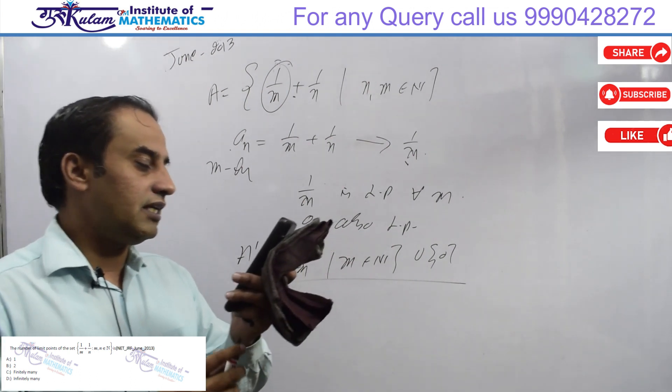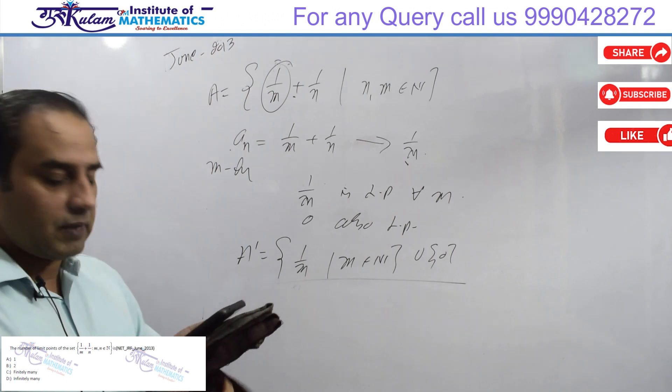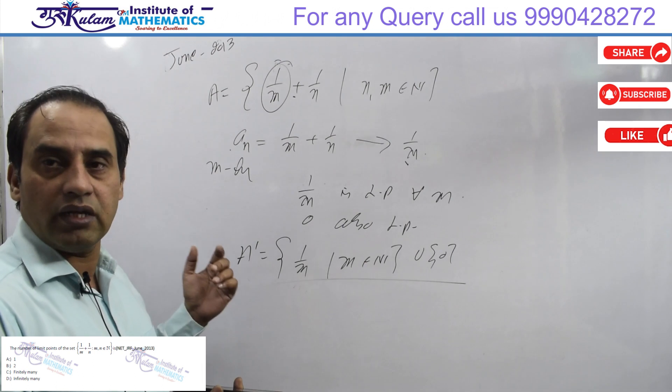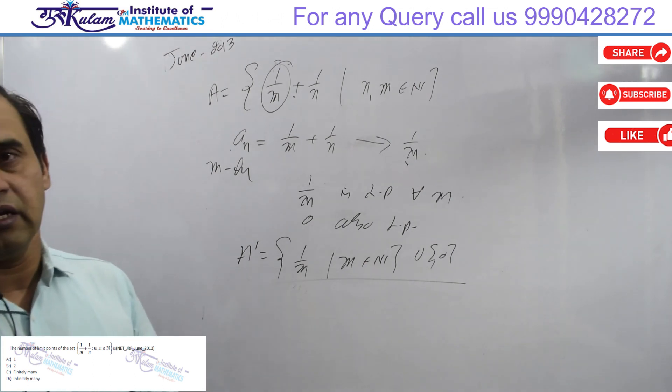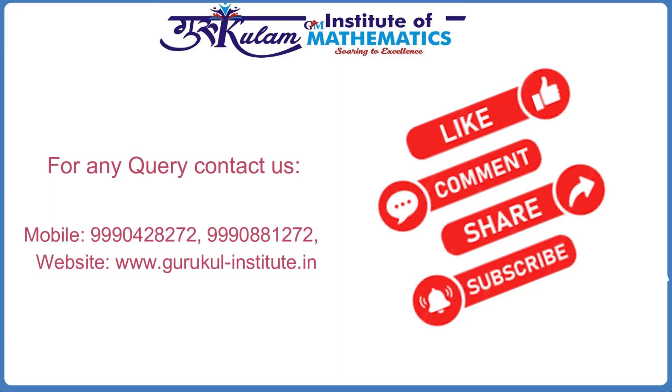And this option is the number of limit points of this set. First option is that 1 is false, second is that 2 is false, third is that finitely many is false, and then d is infinite - true. So the answer should be d option. The answer should be d option.